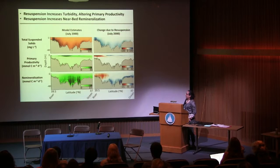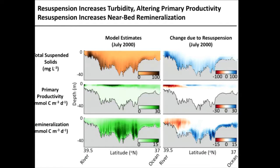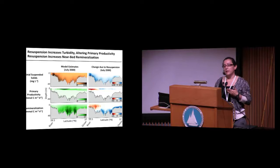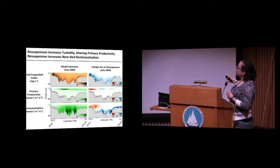To give you a flavor of the types of results we're looking at with this coupled modeling approach, here you're looking at transects that go from near the Susquehanna River down to the coastal ocean. On the left-hand side you're looking at estimates from the model for total suspended solids, primary production, and remineralization. Because this is a modeling approach, we compared two different model runs — one with resuspension and one without resuspension — and used that to estimate the effect of resuspension on our results.